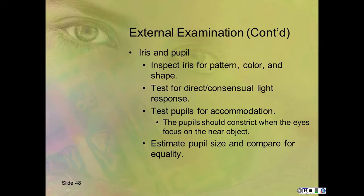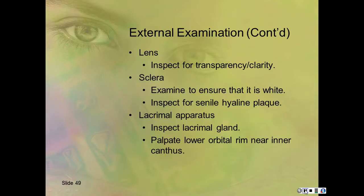Inspect the iris for pattern, color, and shape. Test for direct and consensual light response and test the pupils for accommodation—pupils should constrict when the eyes focus on a near object. Estimate pupil size and compare for equality. For the lens, inspect for transparency and clarity. The sclera should be examined to ensure it's white; inspect for senile hyaline plaques. For the lacrimal apparatus, inspect the lacrimal gland and palpate the lower orbital rim near the inner canthus.